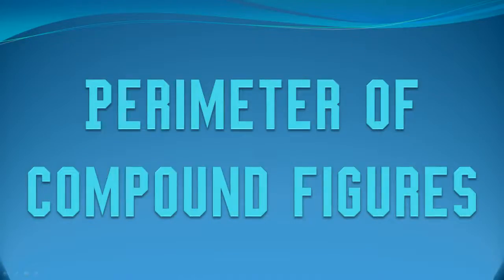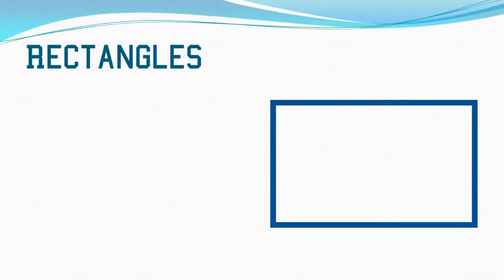Let's apply our knowledge of the perimeter of quadrilaterals to compound figures. Compound figures can be made of different shapes, including rectangles and squares, and some of these properties become very important when understanding a compound figure.